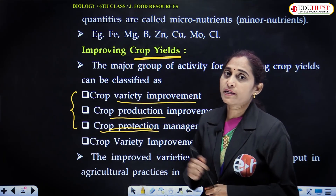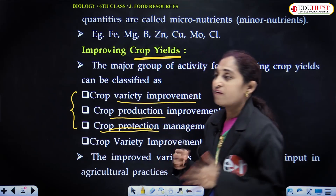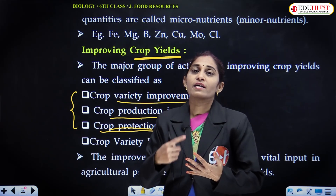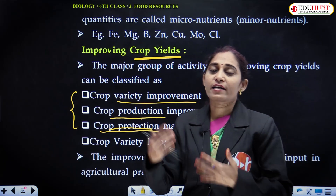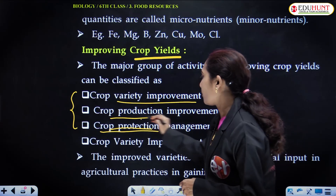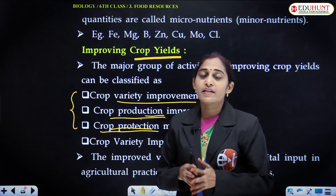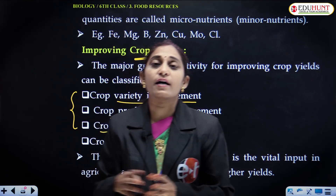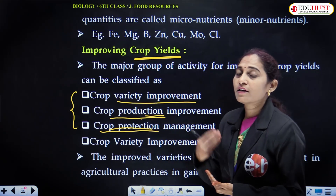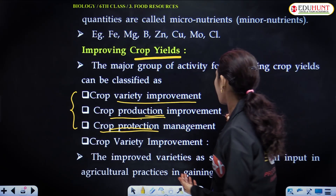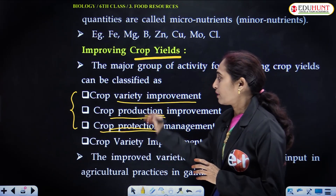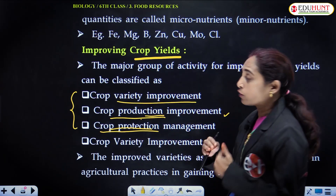The three points are: one, crop variety improvement; two, crop production improvement; and three, crop protection management. For example, in rice there are many varieties — Basmati, IR8, IR20 — each with its own unique features. In crop production improvement, if one variety yields 10 quintals per acre, another may yield more. The variety producing high yield will be selected. These three points are very important to improve crop yields.